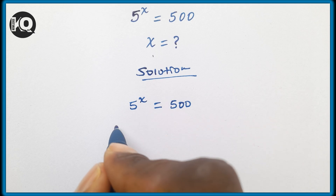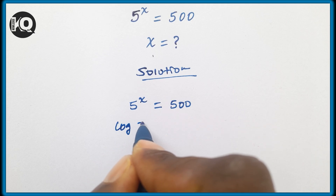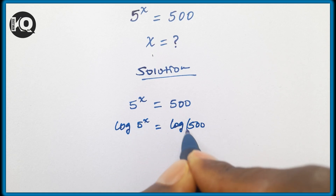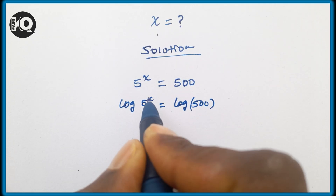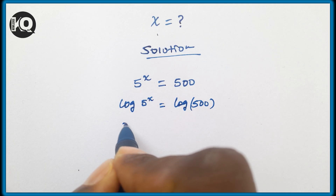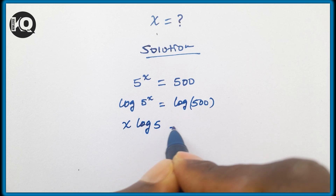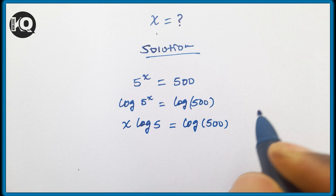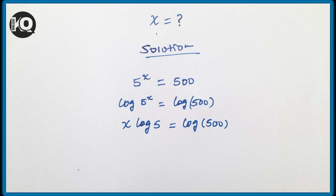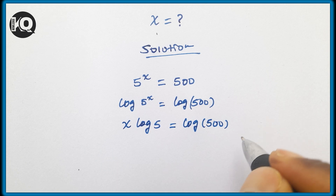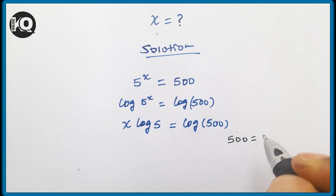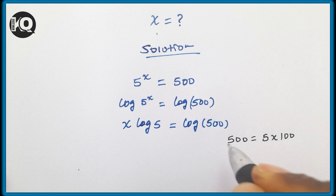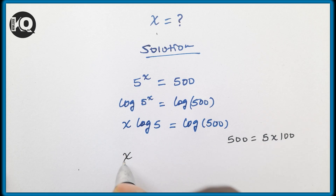Let's introduce a logarithm on both sides: log of 5^x equals log of 500. This exponent comes down to the base, giving us x·log(5) = log(500). Now we can factorize 500 as 5 times 100, so x·log(5) = log(5 × 100).